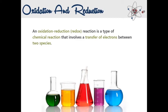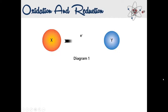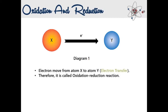One more thing: both reduction and oxidation are occurring simultaneously. Look at the example here. We have atom X and atom Y, and there are electrons moving from atom X to atom Y. Therefore, this is an oxidation-reduction reaction because there is an electron moving between atoms. We can describe the movement of electrons as a redox reaction.